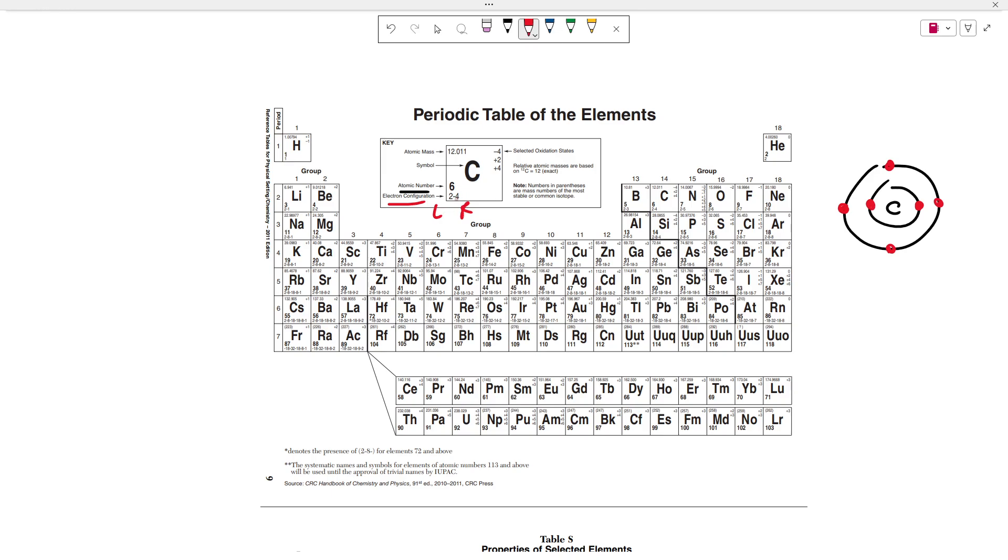From the electron configuration, you can also determine the number of valence electrons because the outermost group or the outermost shell is the valence shell. And however many electrons are located in the valence shell is going to tell you how many valence electrons there are.